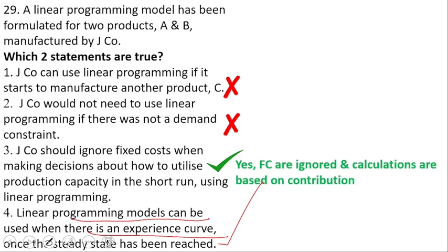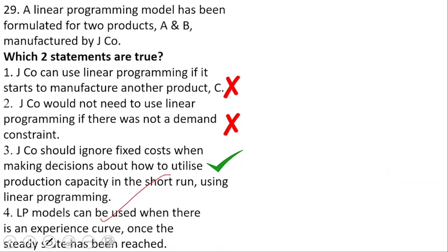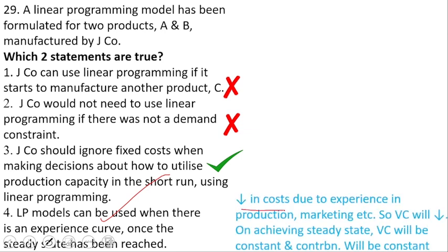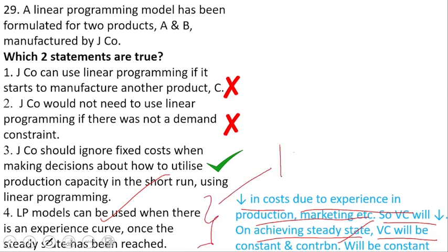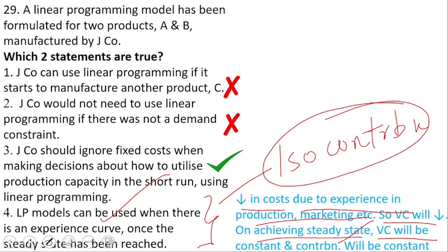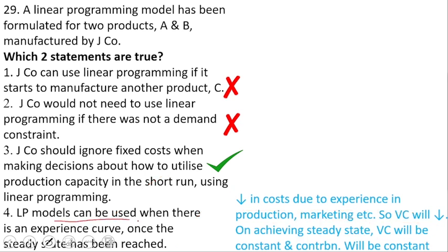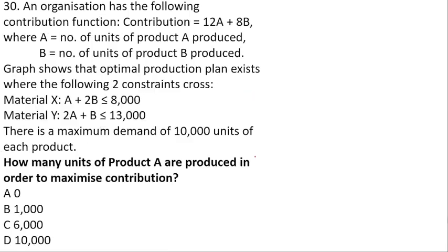Third statement — J Company should ignore fixed costs when making decisions about production capacity in the short run using LP. This is true because calculations are based only on contributions; fixed costs remain constant regardless of the decision. Fourth statement — LP models can be used when there is an experience curve, once the steady state has been achieved. At steady state, variable costs and therefore contributions are constant, which is required to draw the iso-contribution line. So statement four is also true.